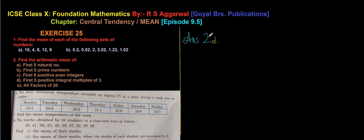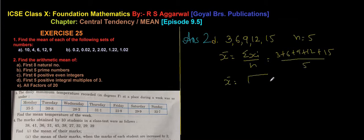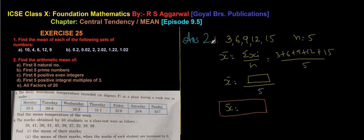For 2D, find the mean of the first 5 positive integral multiples of 3: 3, 6, 9, 12, and 15, so n = 5. x̄ = (3 + 6 + 9 + 12 + 15) / 5. Add all digits and divide by 5. Put the answer in a box.